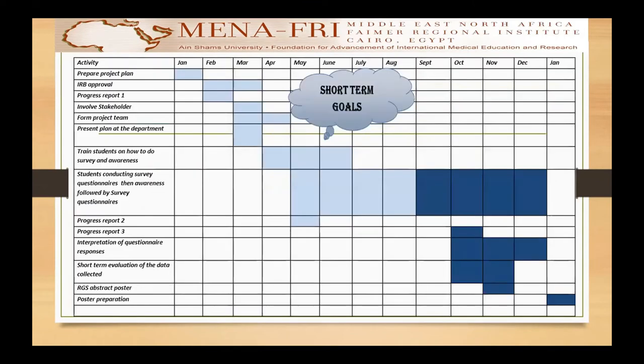According to my Gantt chart, I gathered a group of seven students — my main plan was five, but I gathered seven students in my team. I formed the project team and we started the training process. I trained them on the main aspects of the problem: what is the prevalence of the problem and how management is available for the children.